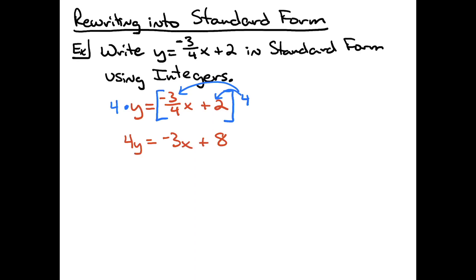Standard form, if we recall what standard form is, that's ax plus by equals c. So if I'm rewriting in standard form, I have to have the ax term first on the left, then the by term, with a constant c on the right-hand side. So I am going to take negative three-x and add three-x to both sides of the equation. When I do that, negative three-x plus three-x crosses out on the right-hand side. On the left-hand side, four-y and three-x are not like terms, so the only thing I can do is write them next to each other.